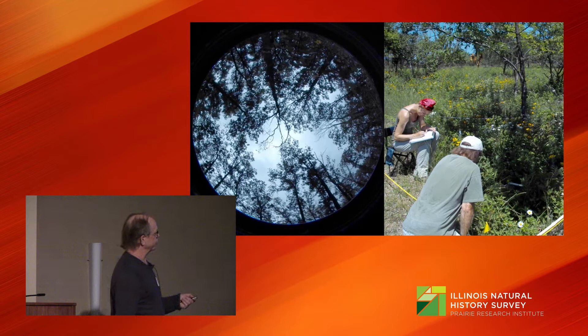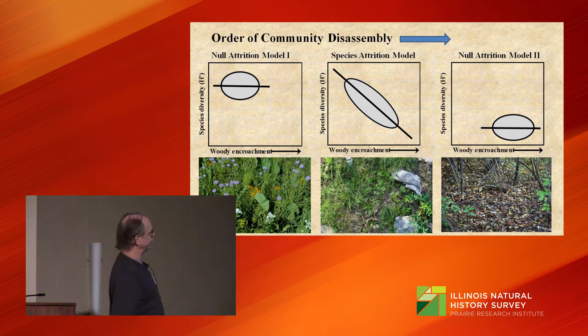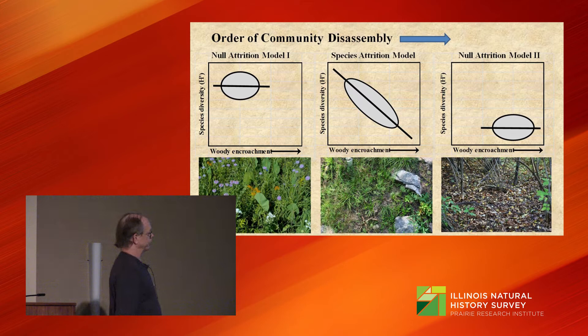And these models depict that. In the middle here, we see that intermediate levels of woody encroachment show an inverse relationship to ground layer diversity. This I take as a signal of restoration potential. At the low and high levels of encroachment, we have null models which have no interaction.